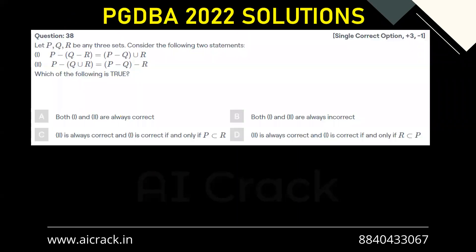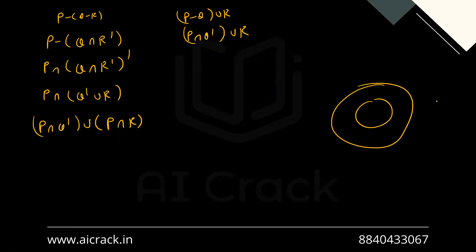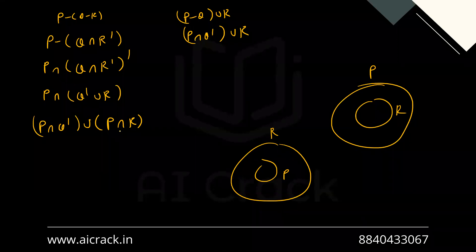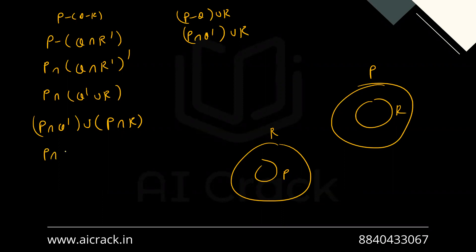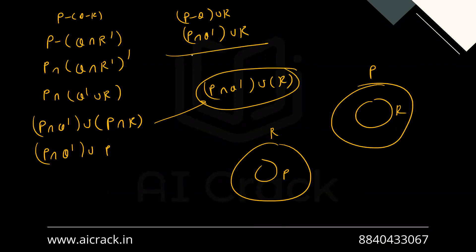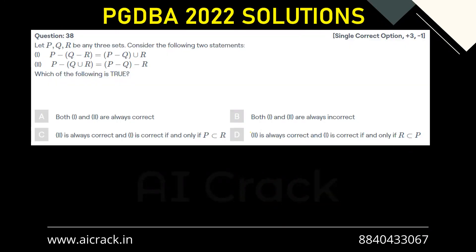Here's the key: it's given that either P is a subset of R or R is a subset of P. Case one: if P is a subset of R, then P intersection R equals P, giving P intersection Q complement union P. Case two: if R is a subset of P, then P intersection R equals R, giving P intersection Q complement union R. This matches the second statement P minus Q union R, so statement one is correct only when R is a subset of P.